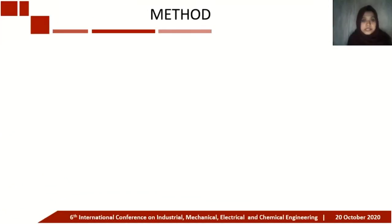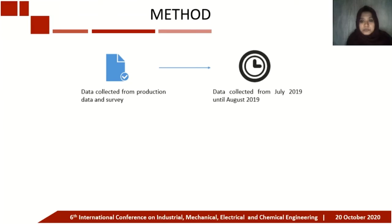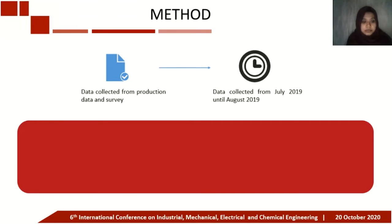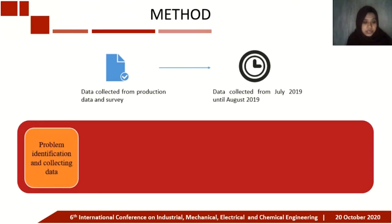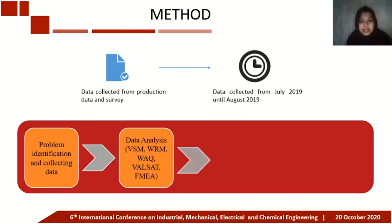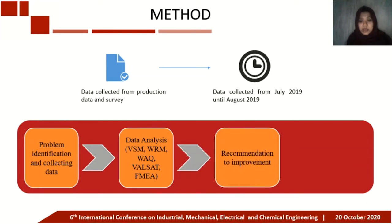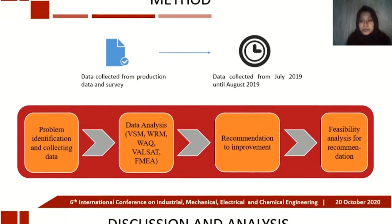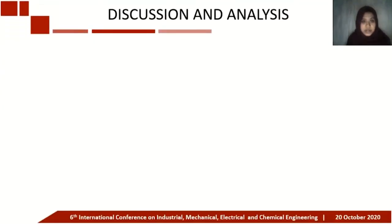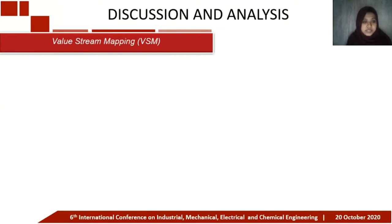The method of this research: data was collected from production data and surveys from July until August 2019. This flowchart shows the implementation of lean manufacturing to solve the problem: first, problem identification and data collection; then data analysis; then recommendations for improvement; and finally, feasibility analysis for the recommendations.